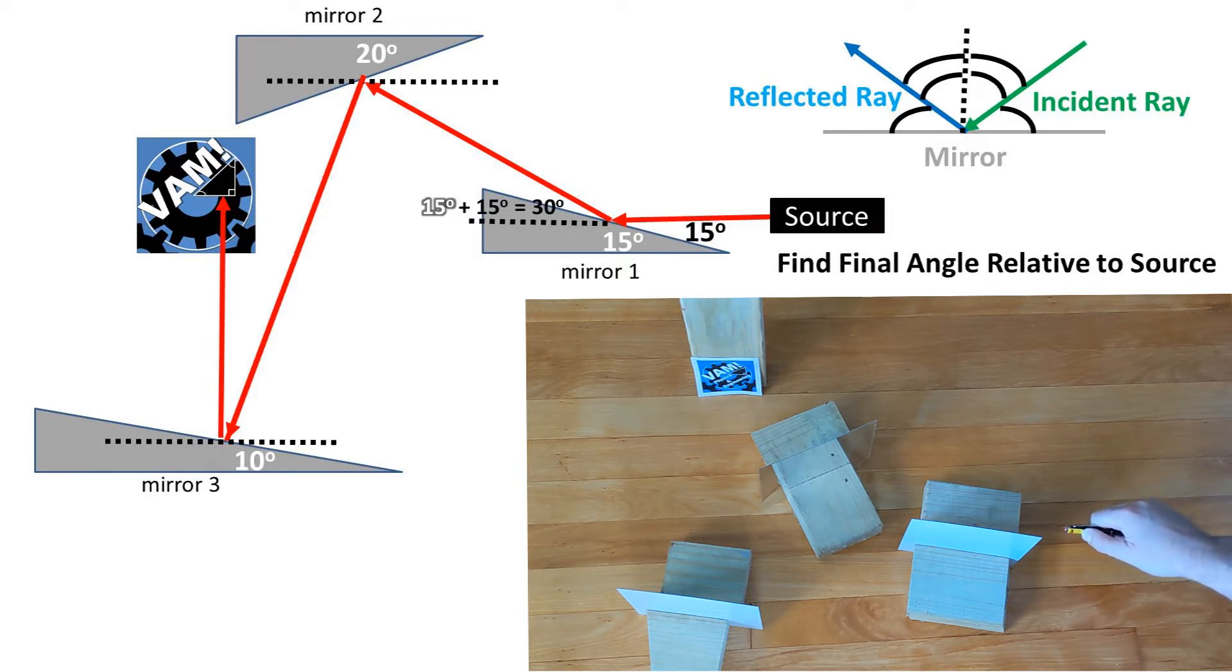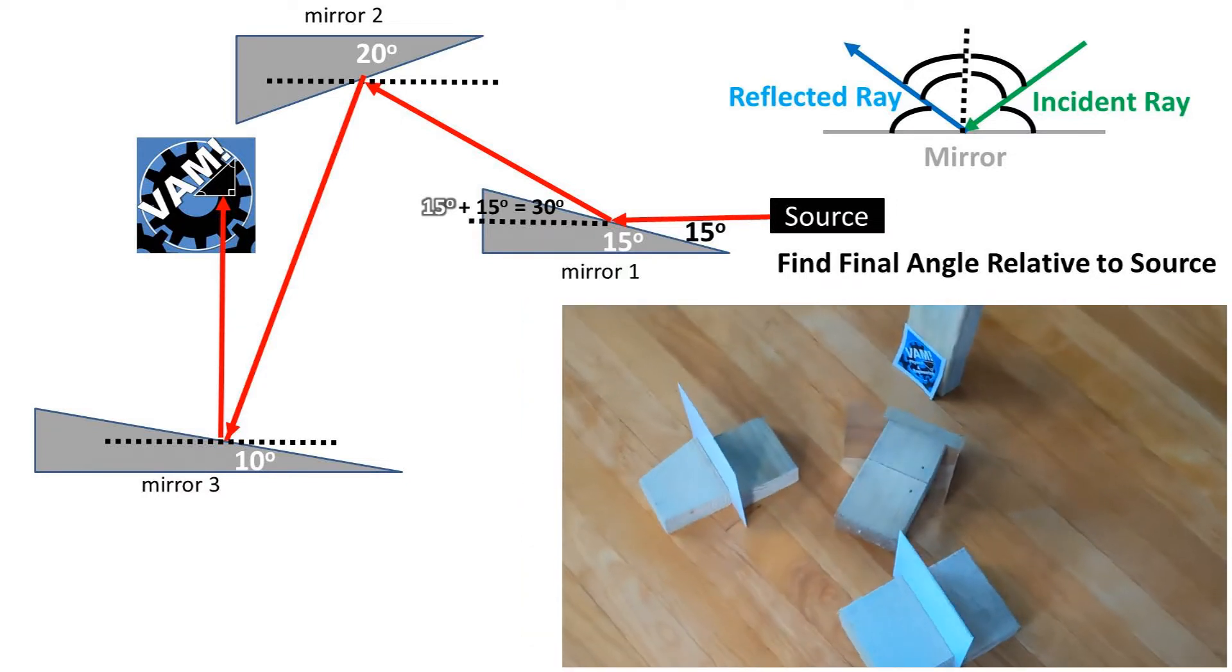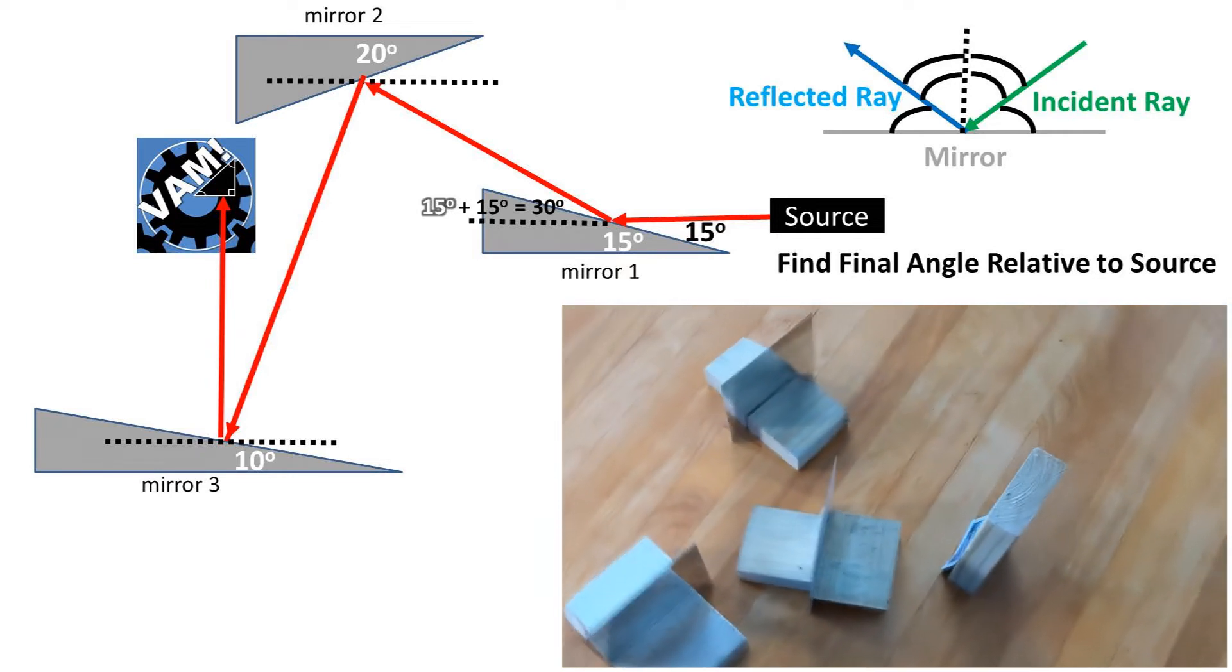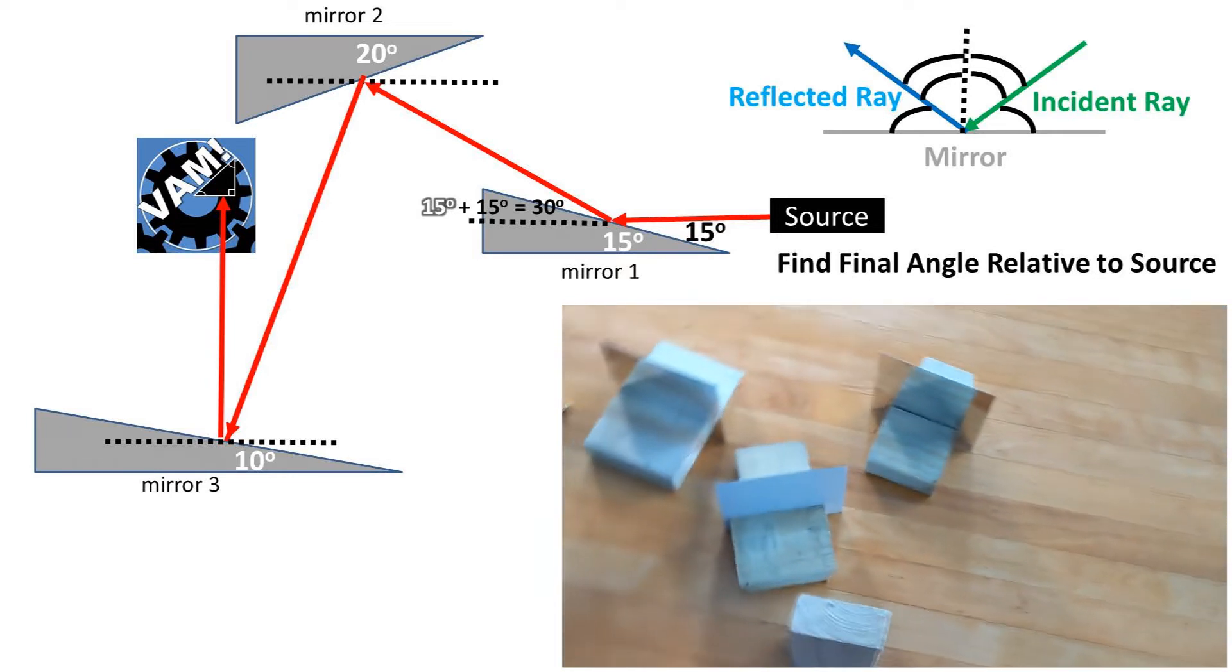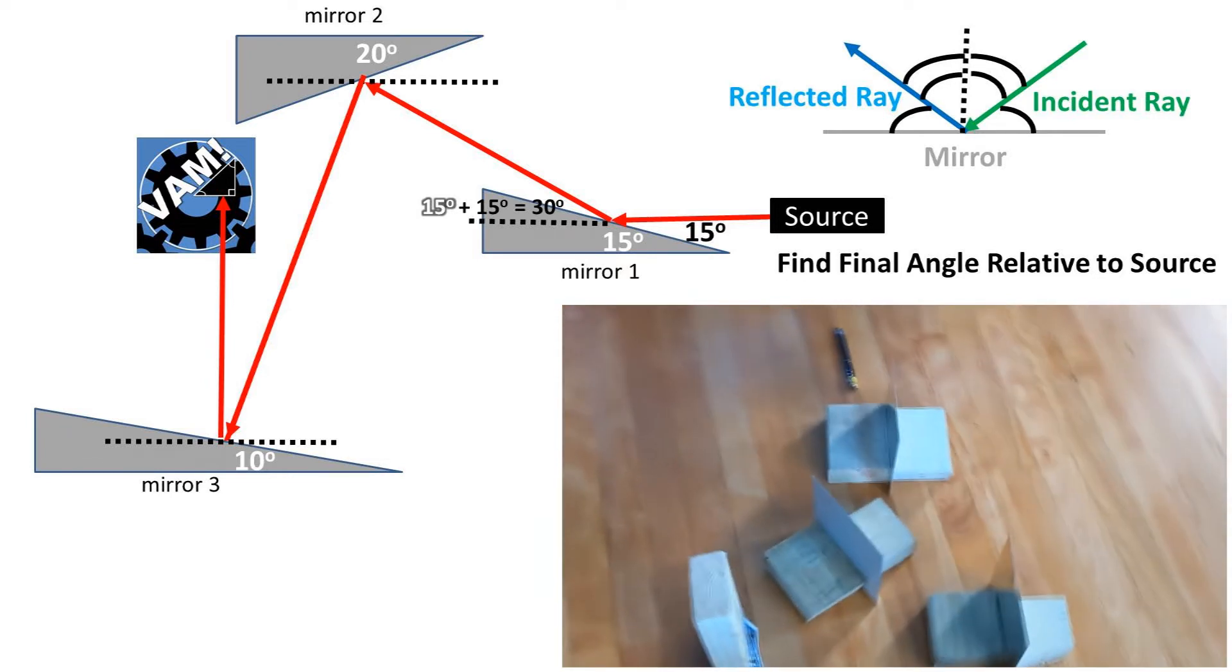This then reflects at a 15 degree angle relative to the mirror's surface, but also, we have to take into account the 15 degree angle slant relative to the source. So it is 15 degrees plus 15 degrees, which is an angle of 30 degrees relative to the source.